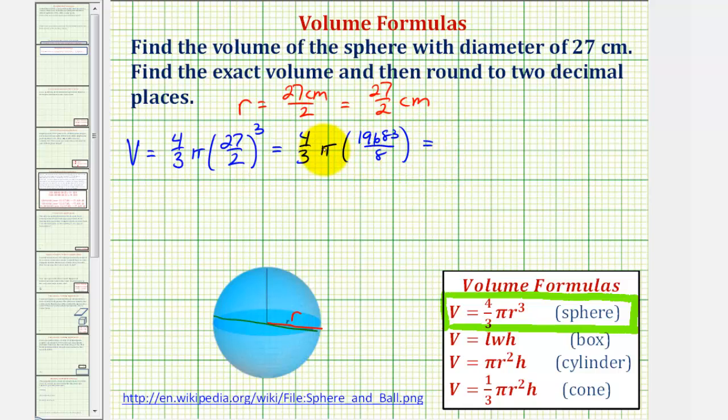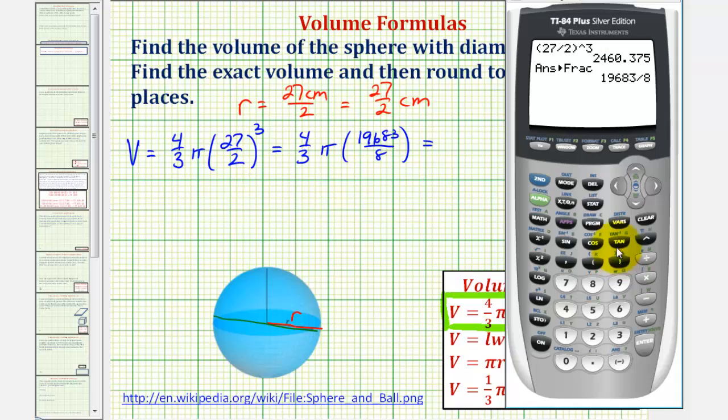Now again, for the exact volume, we're going to leave pi in our answer. So now we'll find the product of four-thirds and this fraction here. So we'll have in parentheses, four divided by three times 19,683 divided by eight, closed parenthesis, enter.